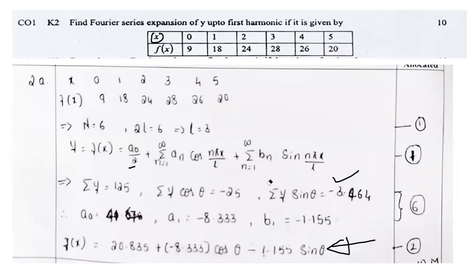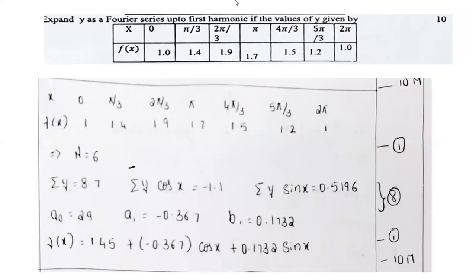I think you can expect a similar kind of problem for your forthcoming examination. So most important — please don't leave this topic. Another question is also a similar fashion. Expand y as a Fourier series up to the first harmonics. They will ask only up to the first harmonics — they never ask about the second or third. The values of y are given by a table with variable x.